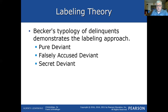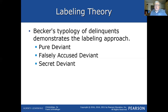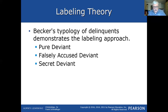Becker's typology of deviance demonstrates labeling theory with several terms. The pure deviant is someone who committed a crime intentionally and continues to do so — not because of any label, but because that's what they wanted to do. They weighed the right and wrong, weighed pleasure versus pain as discussed in chapter two on the classical and neoclassical approach. They made a conscious decision to continue, regardless of the label.